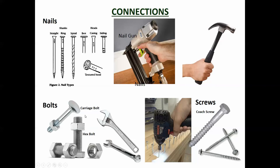Bolts are another connection type. You drill a hole through two pieces of material, put the bolt through, and tighten the nut. A hex bolt — also called an engineer bolt — has a hexagonal head tightened with a spanner. With timber, washers are placed on either side to stop the timber from being crushed when tightening, as the washer spreads the load across a wider area.